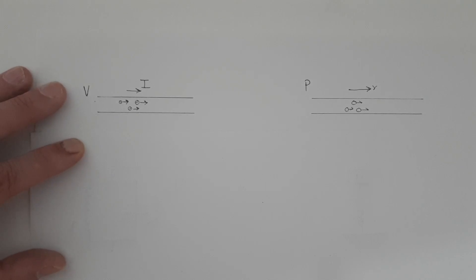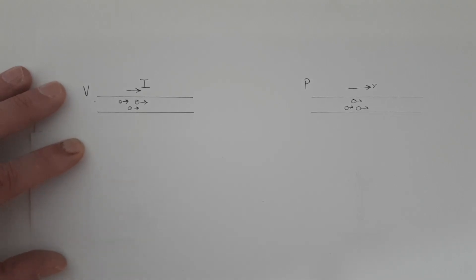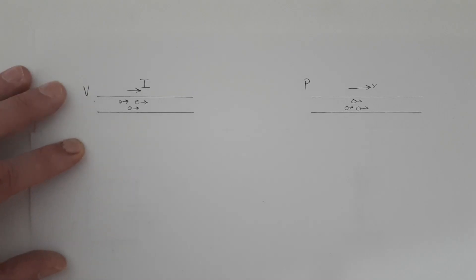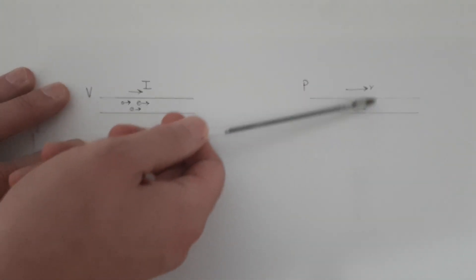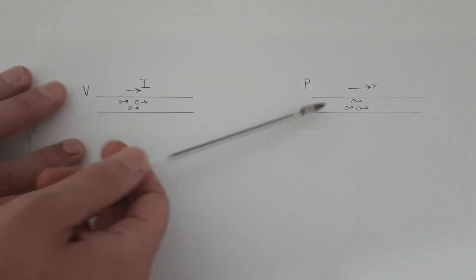Greetings everyone. Today we're going to learn about voltage and current, inductance and capacitance and resistance, what all of them are. In order to understand what voltage and current are, we're going to use an analogy of gas in a pipe, which I've drawn over here.